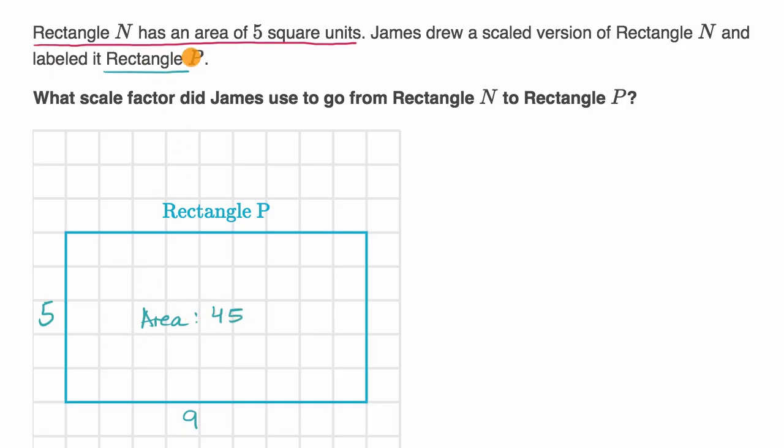Now rectangle N had an area of five square units. So our area, let me write this down. So N area to P area. N area to P area. We are multiplying by a factor of nine. If we're going from an area of five square units to 45 square units. Notice N area is five. N's area is five square units. P's area, we just figured out, is 45 square units. And so we have it growing by a factor of nine.